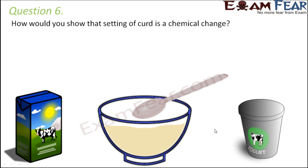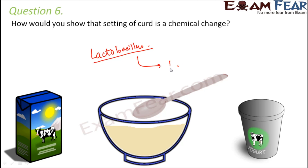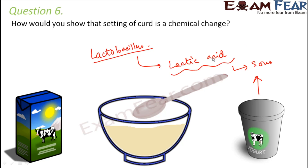Question number six: curd formation. If you take some milk, add a small amount of curd as a starter, and leave it overnight, the curd settles. During this process, bacteria called Lactobacillus present in curd produce lactic acid. Since acids are sour in taste, curd gets a sour taste. New chemical substances like lactic acid are being formed, so this is a chemical change.